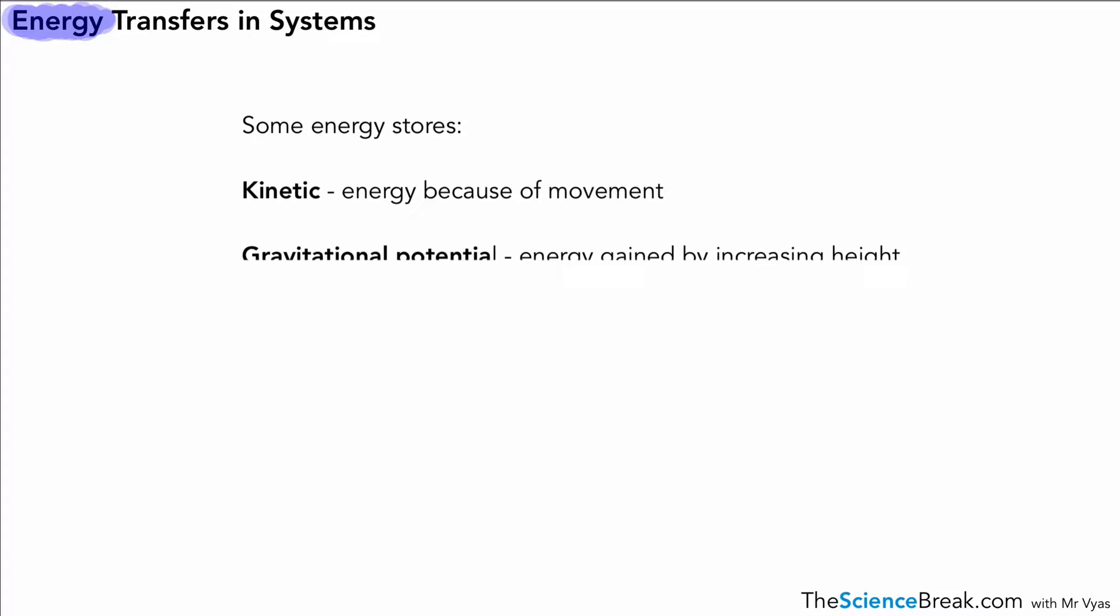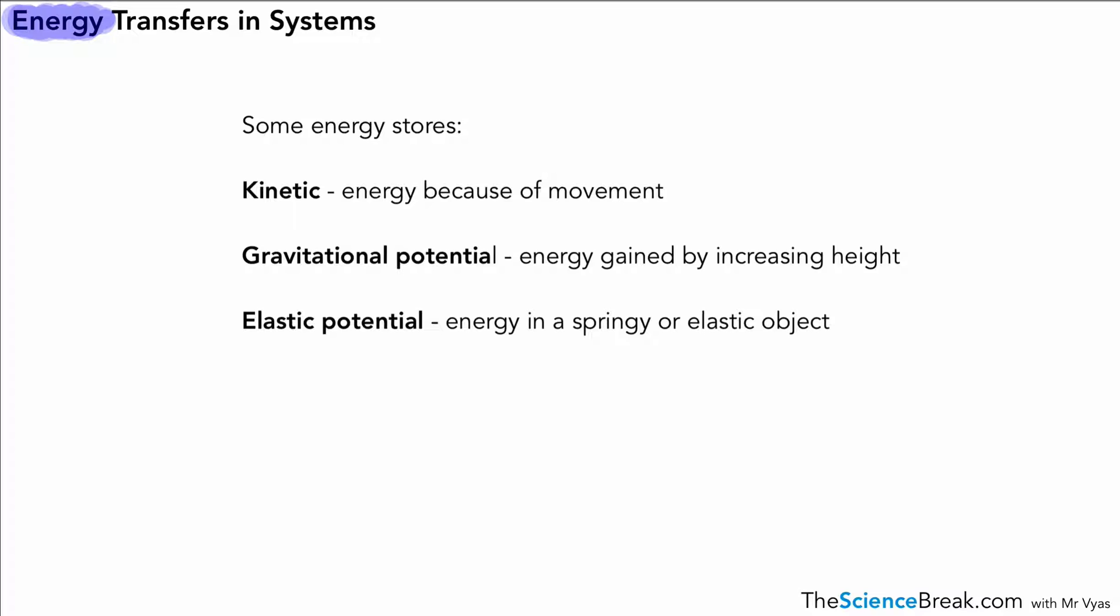So some of them are kinetic energy, which is energy associated with movement. We've got gravitational potential, which is energy gained by increasing height. We've got elastic potential energy associated with springy or elastic objects, thermal energy or sometimes called heat energy, and this is because of an object's temperature.